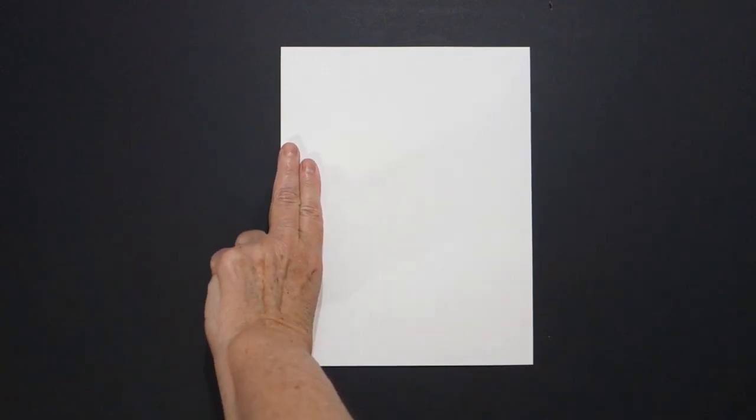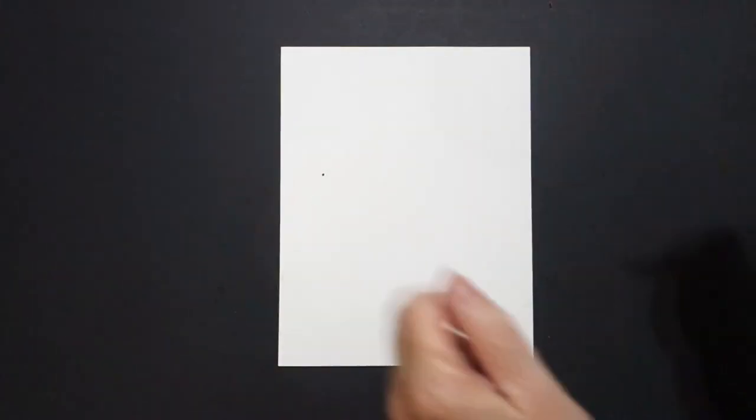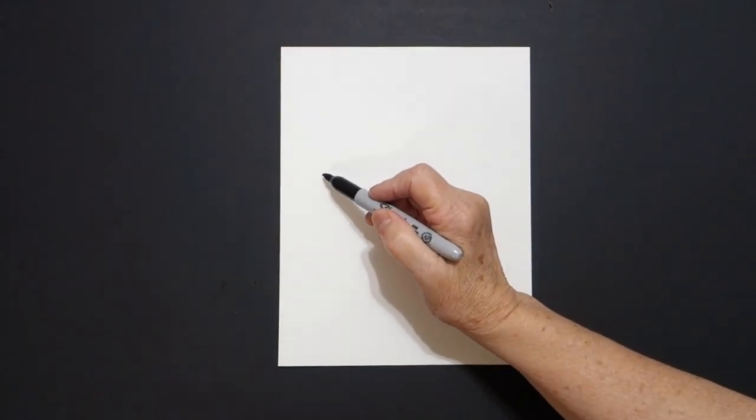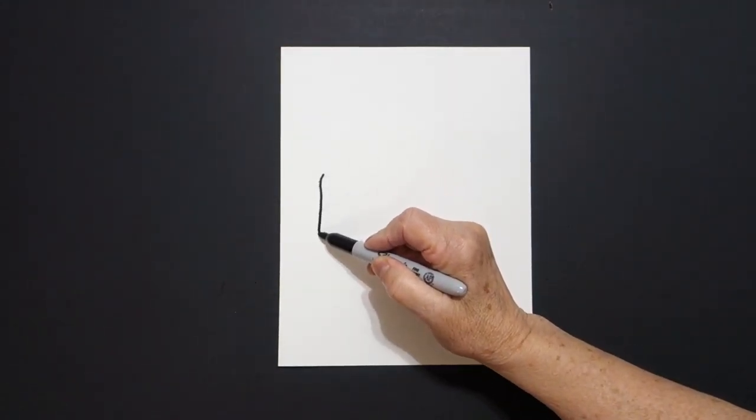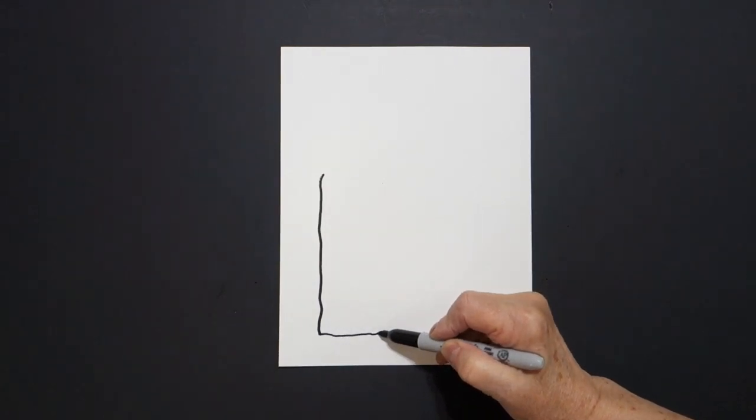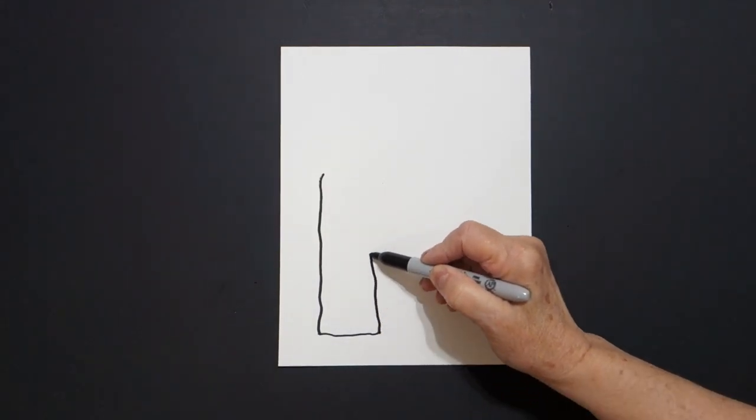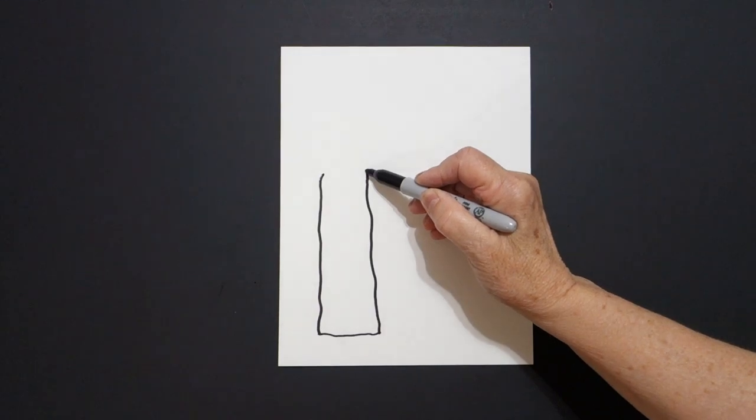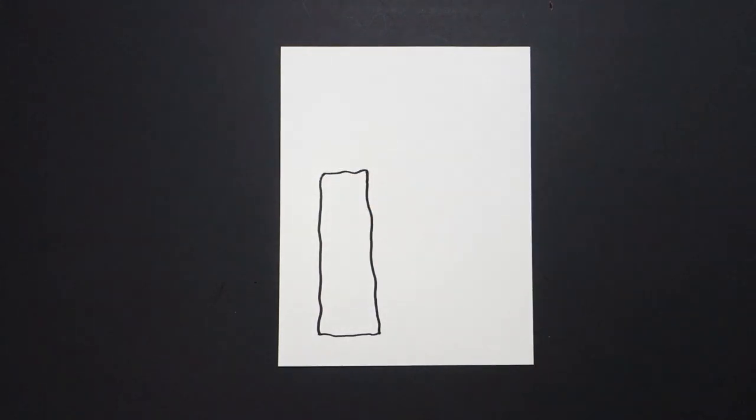Take two fingers over here on the left and I put a dot. And from that dot I draw a slightly wavy line down, slightly wavy line over, slightly wavy line up, slightly wavy line connect.